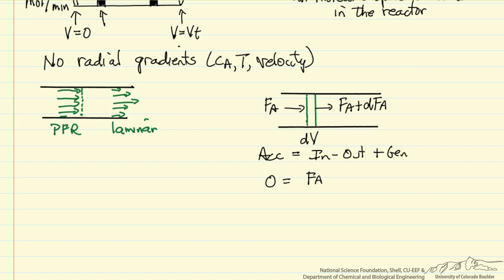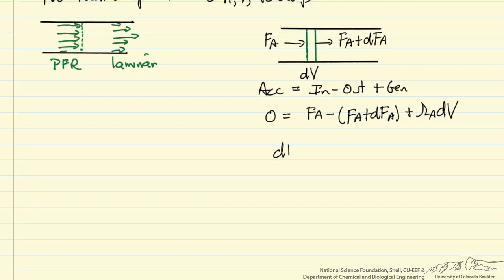We're interested in steady state, so accumulation is zero. We're going to do a balance on one component, so that's A in this case, in minus out, and the generation is some rate of reaction in this differential volume. So the rate of reaction is per volume, so we multiply it by the differential volume. And this simplifies to the change in the molar flow rate with cumulative volume is R sub A, where R sub A might be K, concentration of A, raised to some power.